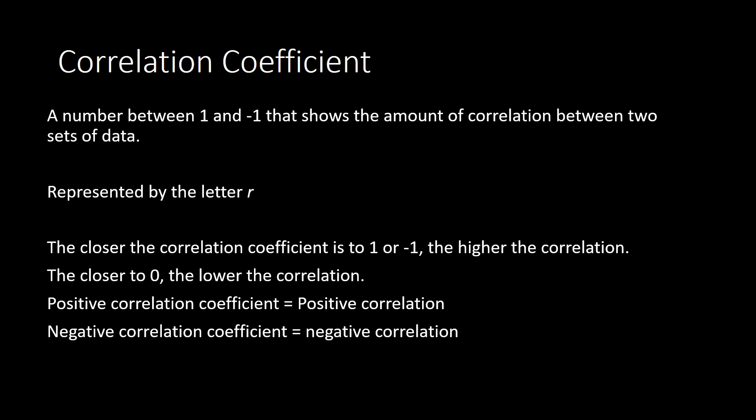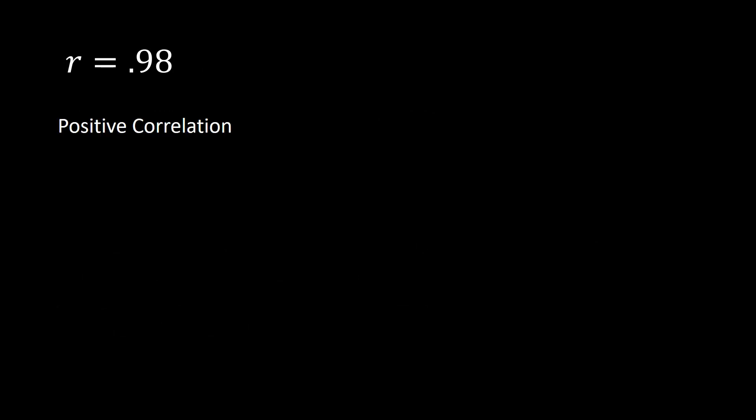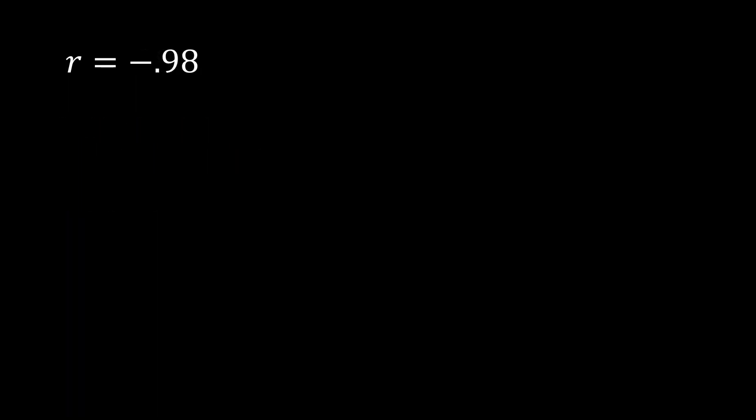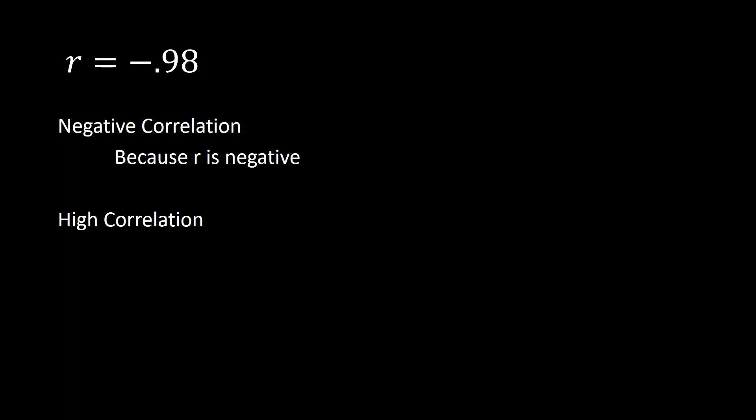For example, if the correlation coefficient r equals 0.98, notice it is positive, so we have positive correlation. And because it's closer to 1 than it is to 0, it has high correlation. Whereas if r equals negative 0.98, that means negative correlation, and because it is closer to negative 1 than it is to 0, it's going to have high correlation as well.